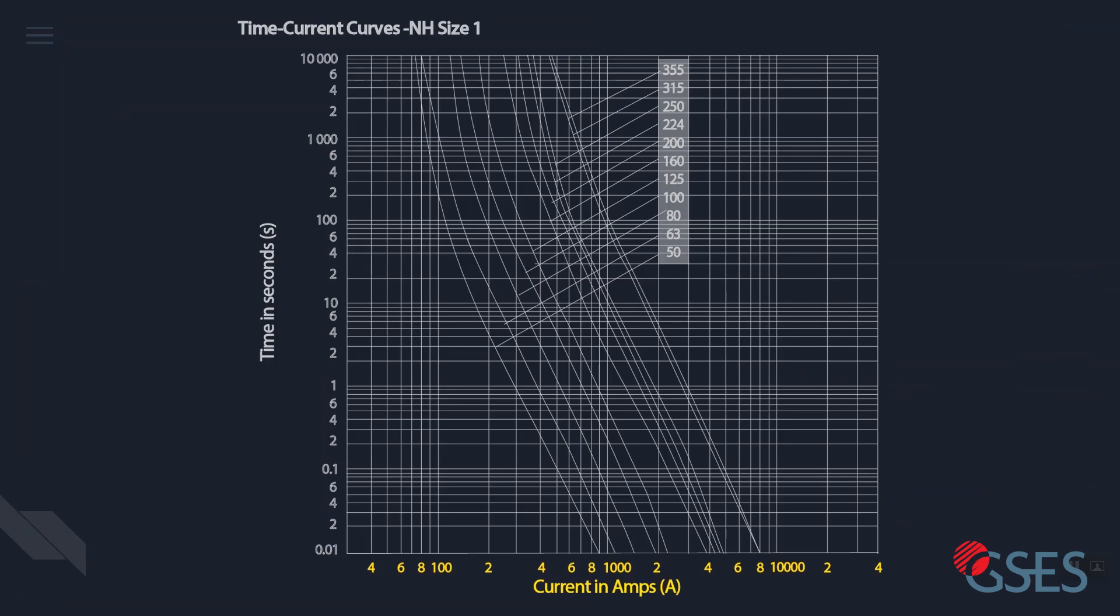The x-axis shows the current in amps and the y-axis shows the time in seconds. Both axes are in a logarithmic scale, like a slide rule, the decibel sound scale, and the Richter scale. The curved lines represent time-current characteristics of each fuse supplied by the manufacturer.